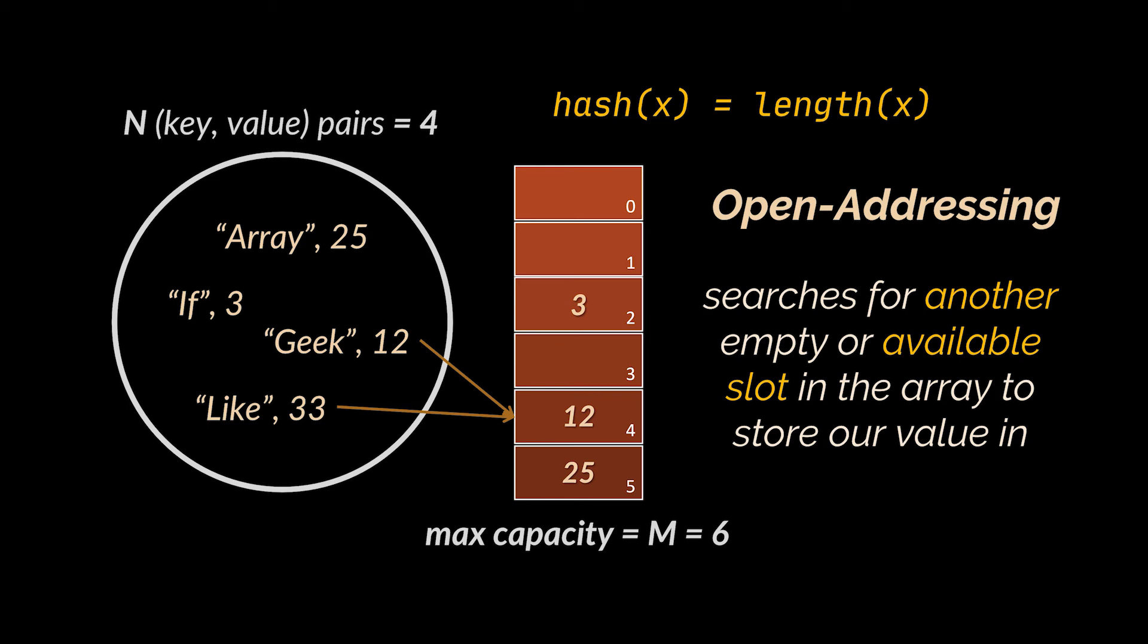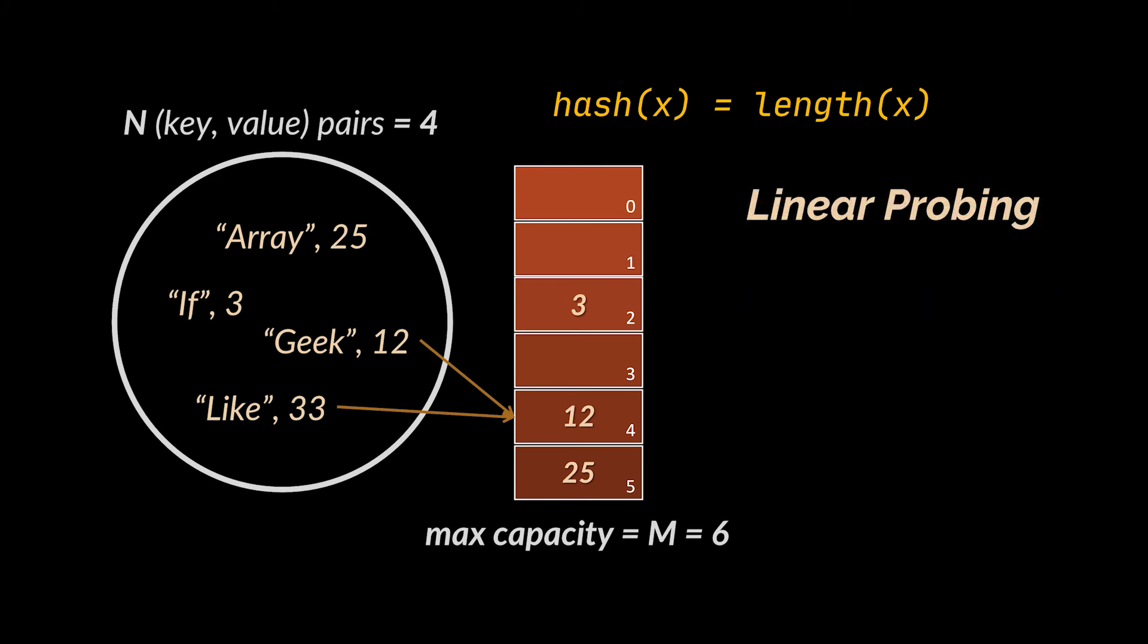Some of the well-known probe sequences include linear probing, in which we travel between probes or array slots in a linear way in search of other empty slots. The index difference in which we search is fixed, hence the linear term, and is often set to one.